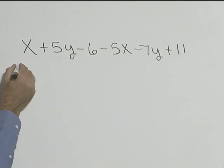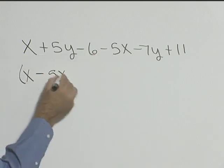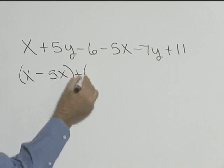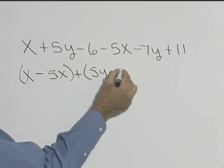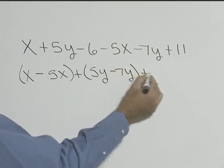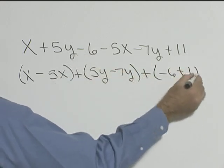So let's take our x's and put them together. This will be x and negative 5x, plus we have 5y and negative 7y, plus our numbers are negative 6 plus 11.